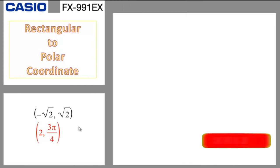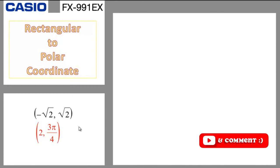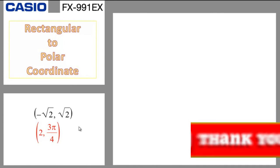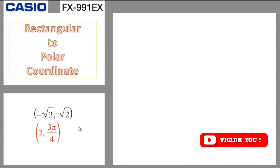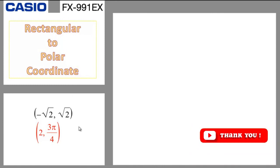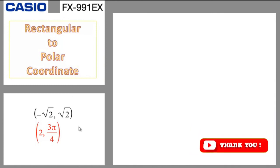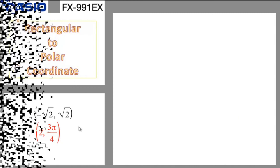We have now covered most of the ideas about complex numbers — changing from rectangular to polar and polar to rectangular, plus polar coordinates. If you like the video, don't forget to like and share. Welcome to Math for Fun, and bye for now.